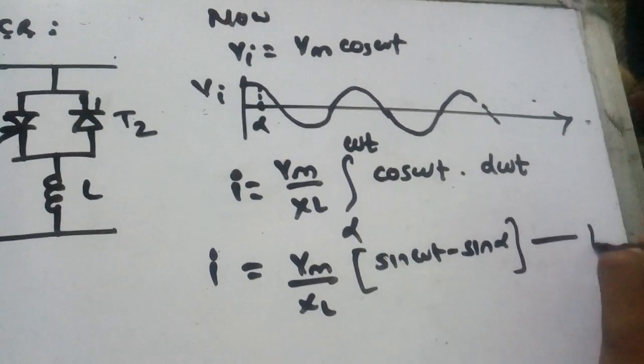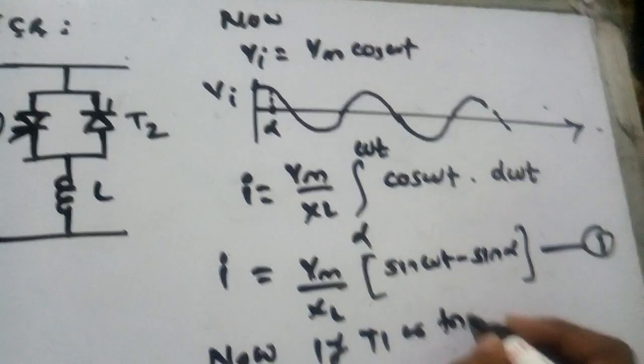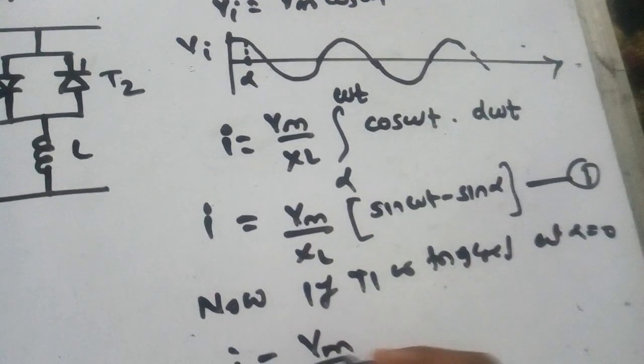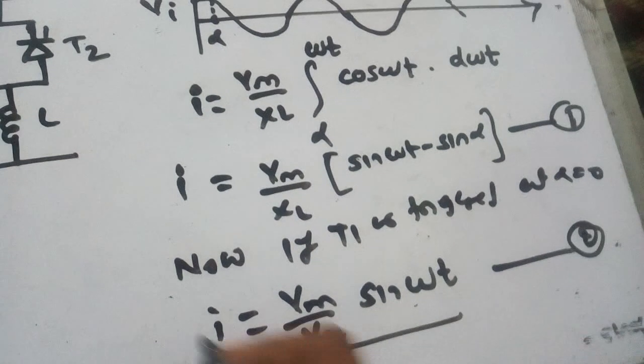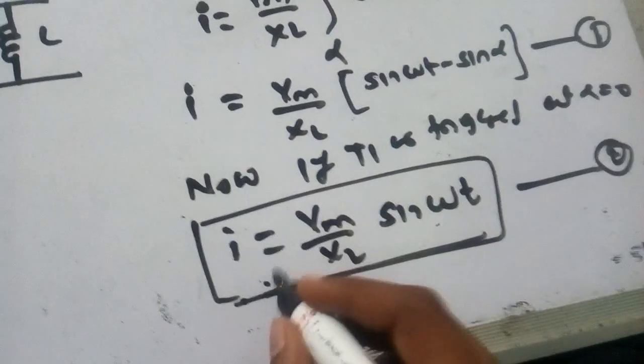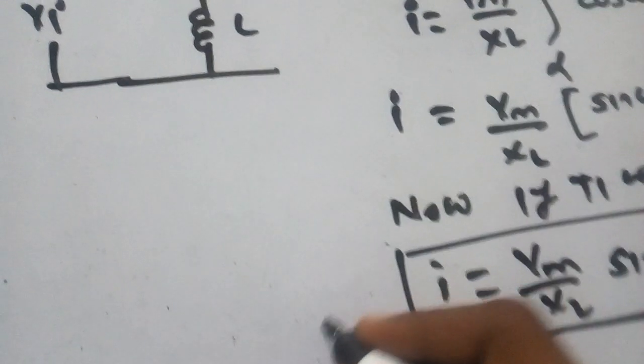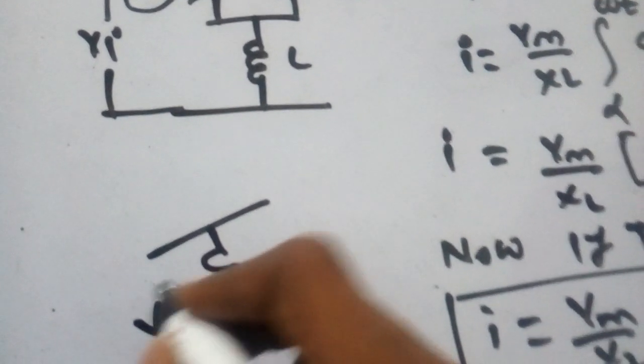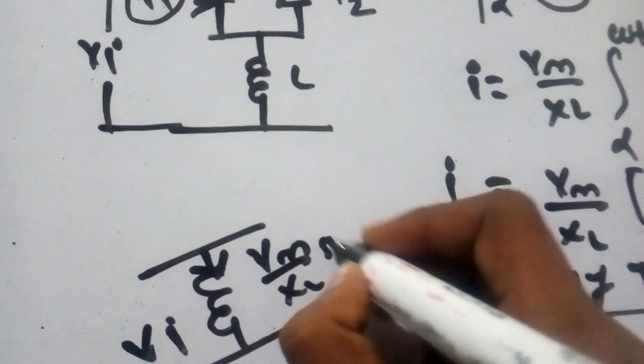This gives Vm upon XL times sine omega t minus sine alpha. This is equation 1. Now if T1 is triggered at alpha equal to 0, then I equals Vm upon XL sine omega t. This current is obtained without the thyristor, just reactor and voltage applied.